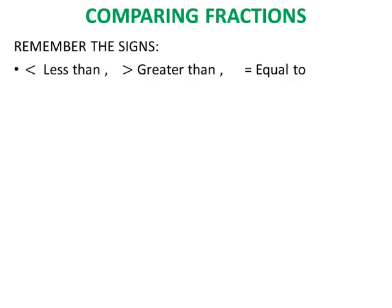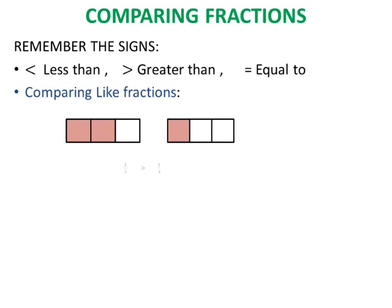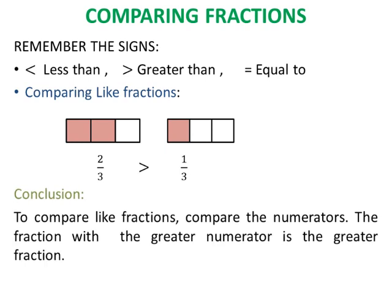Comparing fractions. Now let us learn to compare fractions. Remember the signs: less than, greater than, and equal to. First, let us compare like fractions — fractions having the same denominator. From the figure, we can see 2 by 3 is greater than 1 by 3; they are like fractions as they have the same denominator. The rule: to compare like fractions, compare the numerators — the fraction with the greater numerator is the greater fraction.